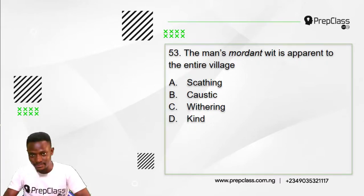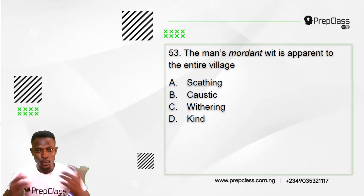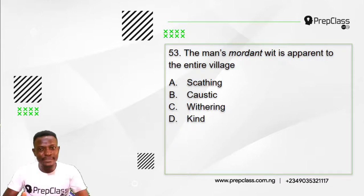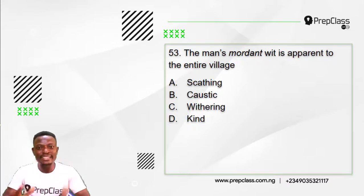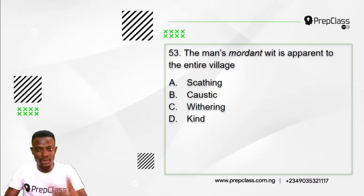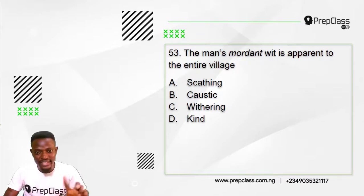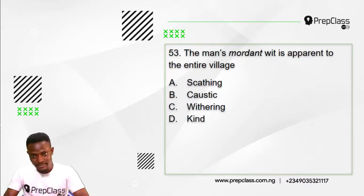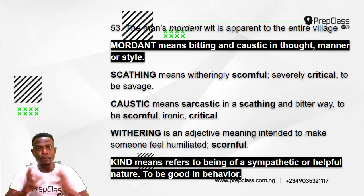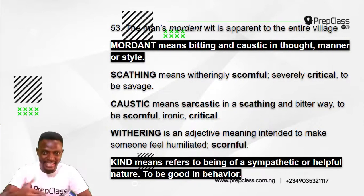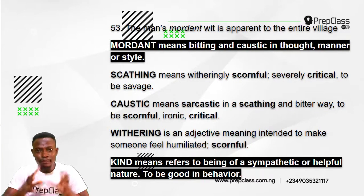Moving on to question 53. Remember we are to select the option opposite in meaning to the word or phrase in italics. Question 53 reads: the man's mordant wit is apparent to the entire village. The word in italics here is 'mordant.' The options are: option A, option B, option C: withering, option D: kind. 'Mordant' means biting and caustic in thought, manner, or style.